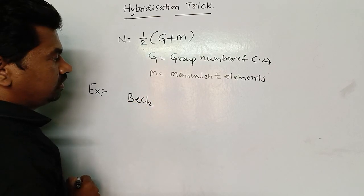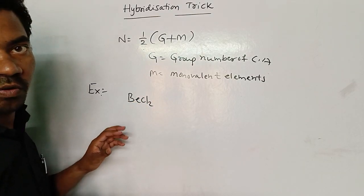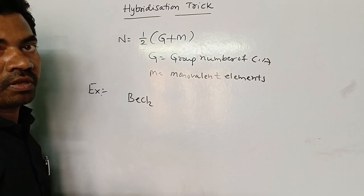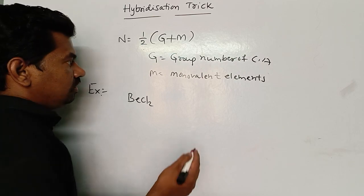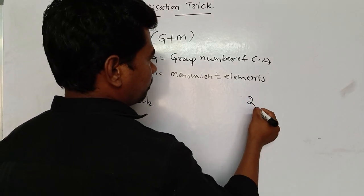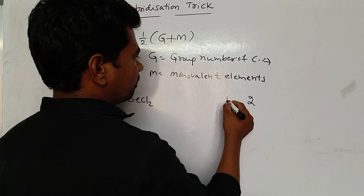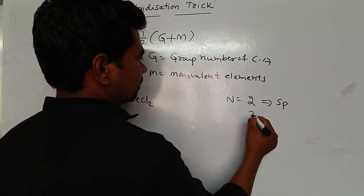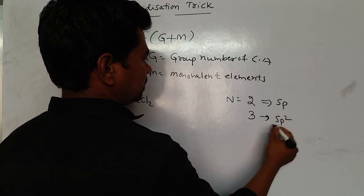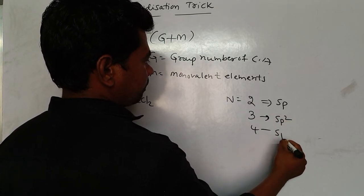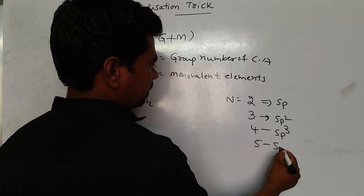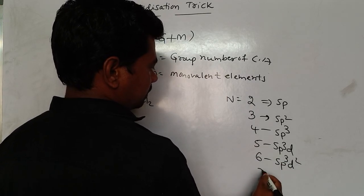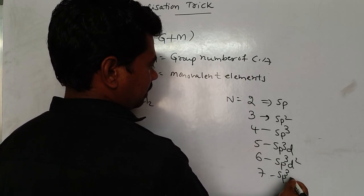For example, the BeCl2 molecule. In this molecule, what is the hybridization? If you get N equals 2, then it means it is sp hybridization. Then 3 means sp2 hybridization, 4 means sp3 hybridization, 5 means sp3d, 6 means sp3d2, and 7 means sp3d3 hybridization.